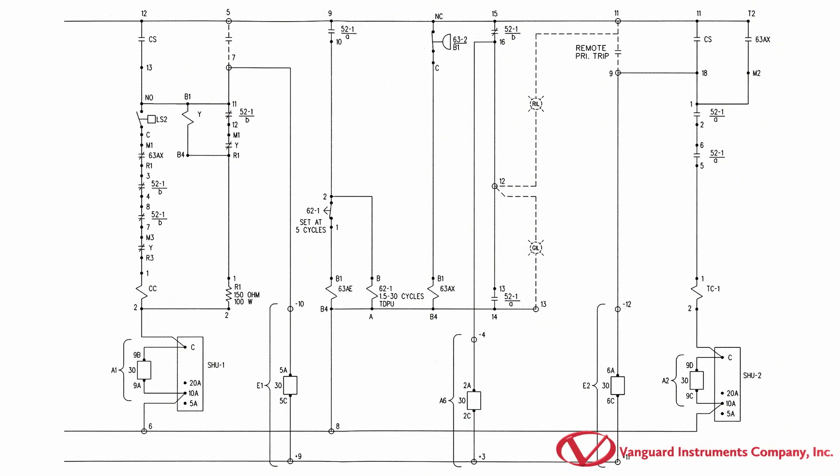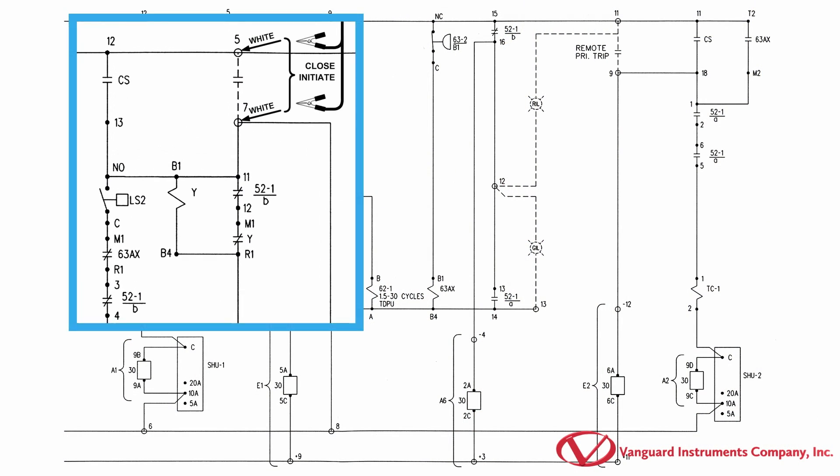In this illustration, the initiate circuit will connect terminal 5, which is the positive DC source, to terminal 7 of the circuit breaker closed circuit.